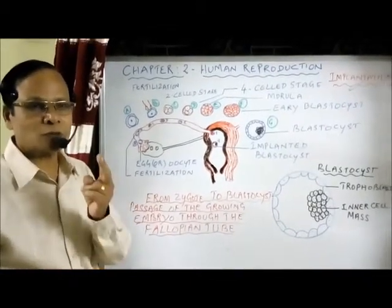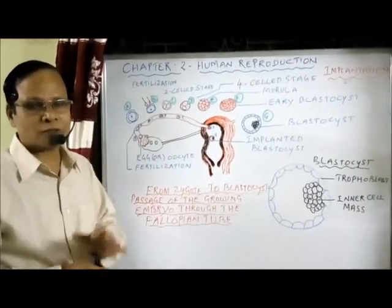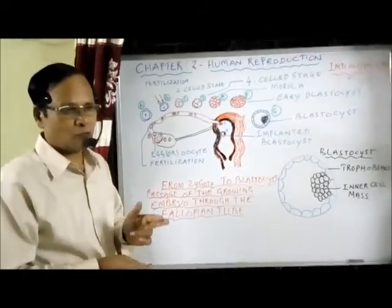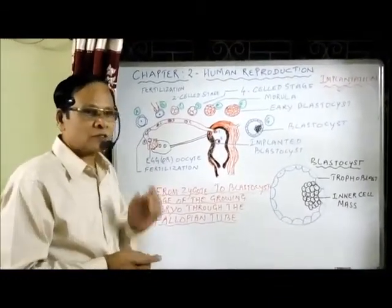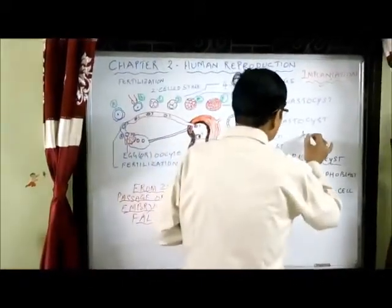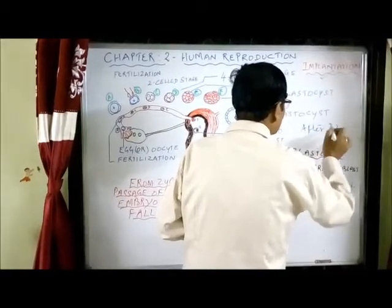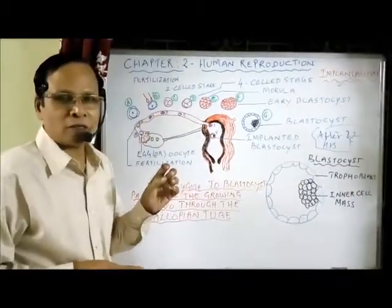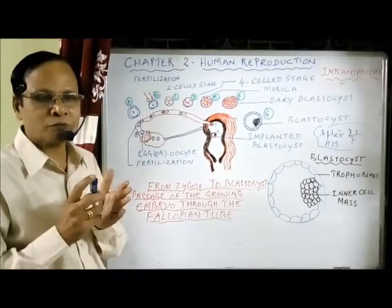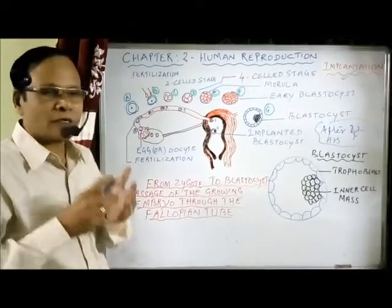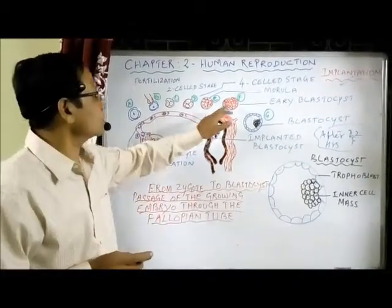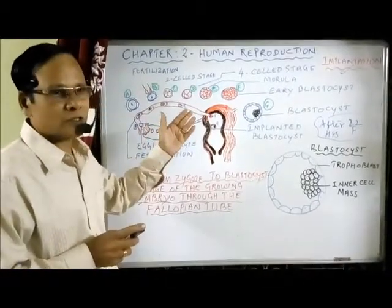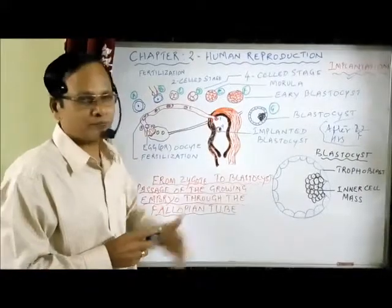The first cleavage division results in 2 blastomeres, the second in 4, the third in 8, and so on — 2, 4, 8, 16 cells. After 72 hours of fertilization, the embryo forms a berry-shaped structure with a cluster of 16 or more cells called a morula — a loose collection of cells.